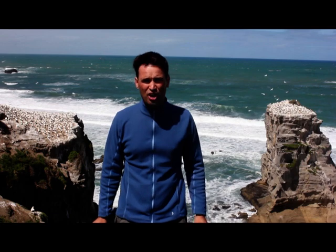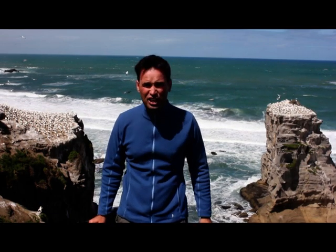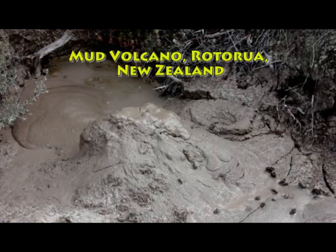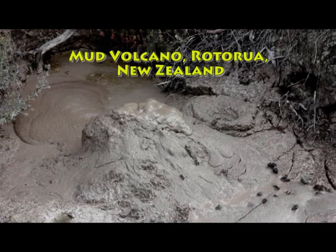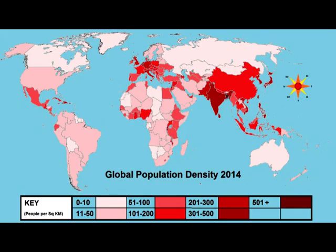When talking about spatial variations of coastal landforms at a beach like Muriwai, this is an example of a local scale. Patterns of volcanic activity in the Bay of Plenty, New Zealand, represent a regional scale. The distribution patterns of the world's population represent a global scale.